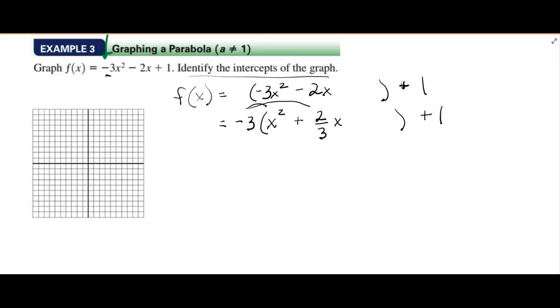However, we still need to complete the square. So you look inside the parentheses. Take the 2 thirds. You're going to divide it by 2, but that's the same as multiplying by 1 half. And you're going to square that. Now when you do that, you're going to get 1 third squared, because the 2's cancel. And that's going to be 1 ninth.